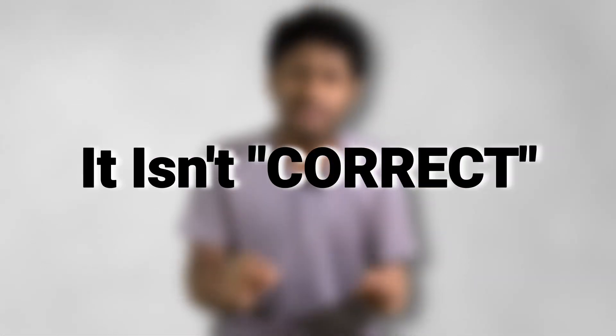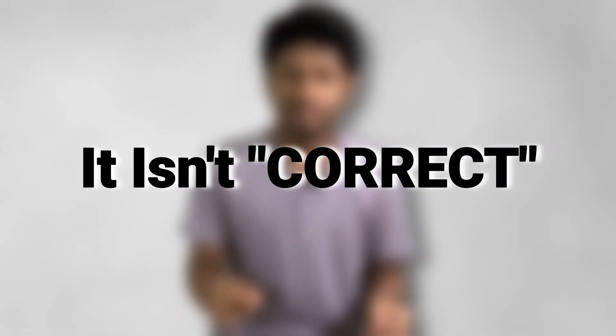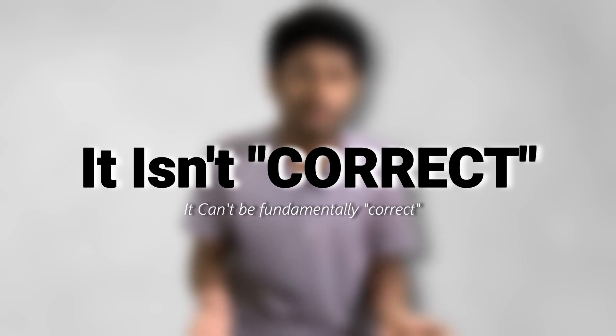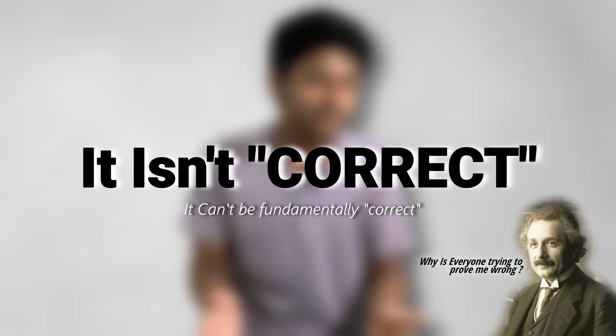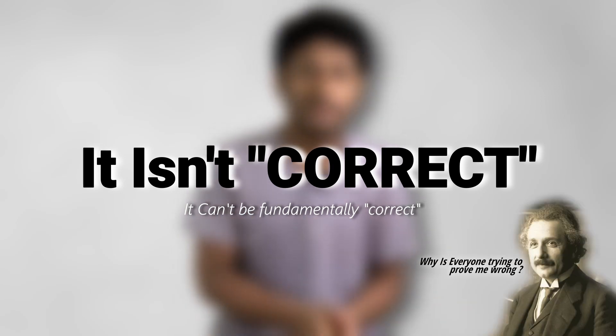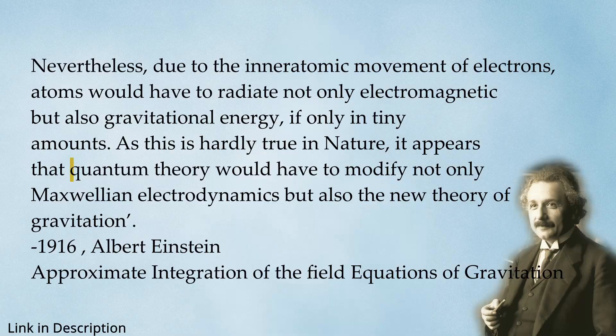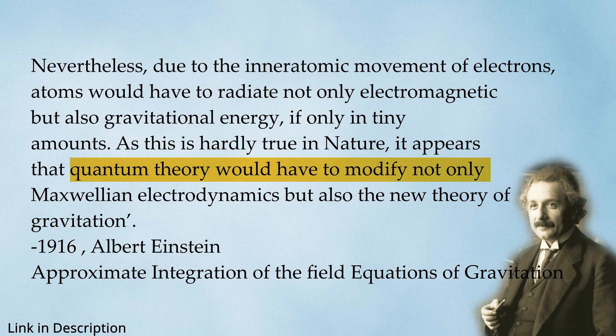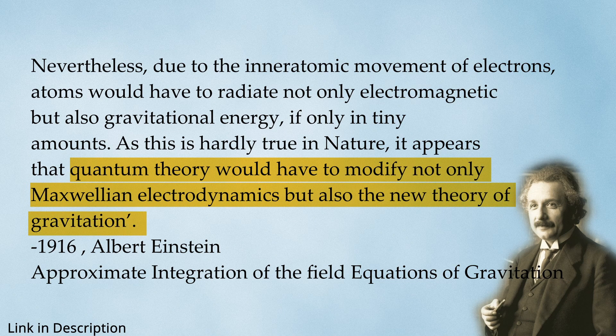But still, it isn't correct. It can't be correct — at least not fundamentally. We are certain that there must be something much deeper about gravity. And even Einstein kind of knew this. In a 1916 paper, he wrote that quantum theory would have to modify not only Maxwellian electrodynamics but also his new theory of gravitation.